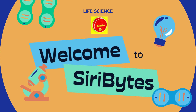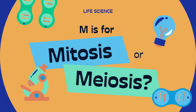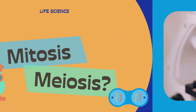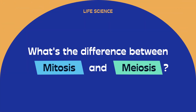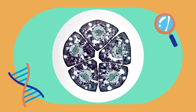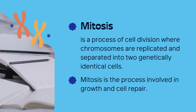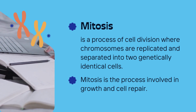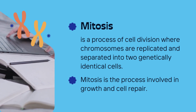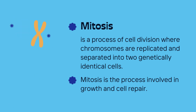Welcome to Siri Bytes. M is for mitosis or meiosis. What's the difference between mitosis and meiosis? Mitosis is a process of cell division where chromosomes are replicated and separated into two genetically identical cells. Mitosis is the process involved in growth and cell repair.